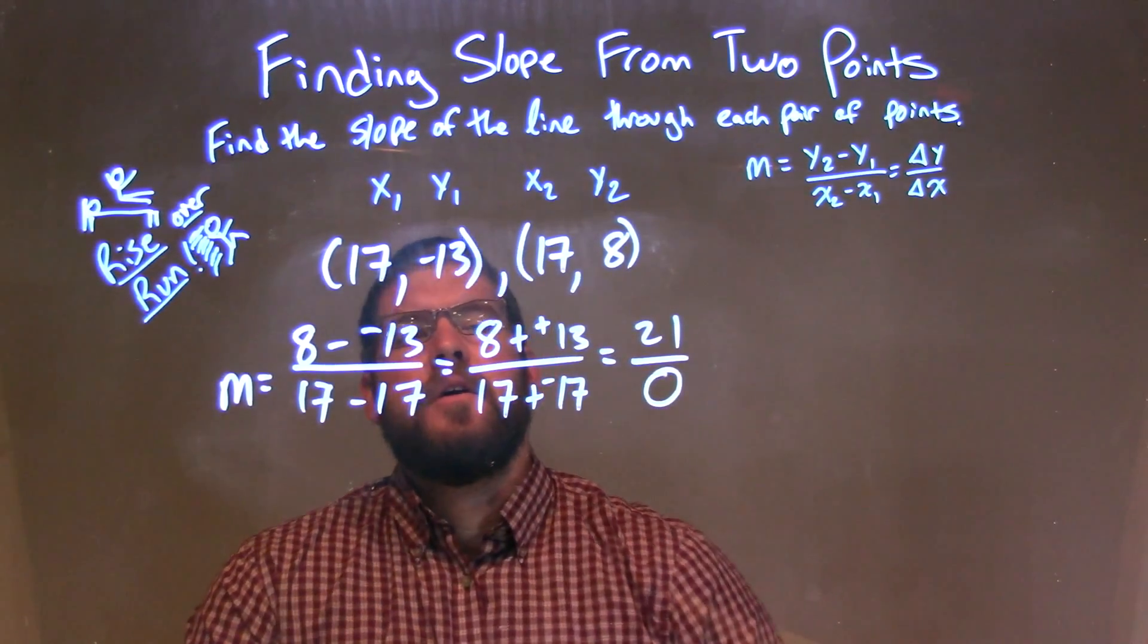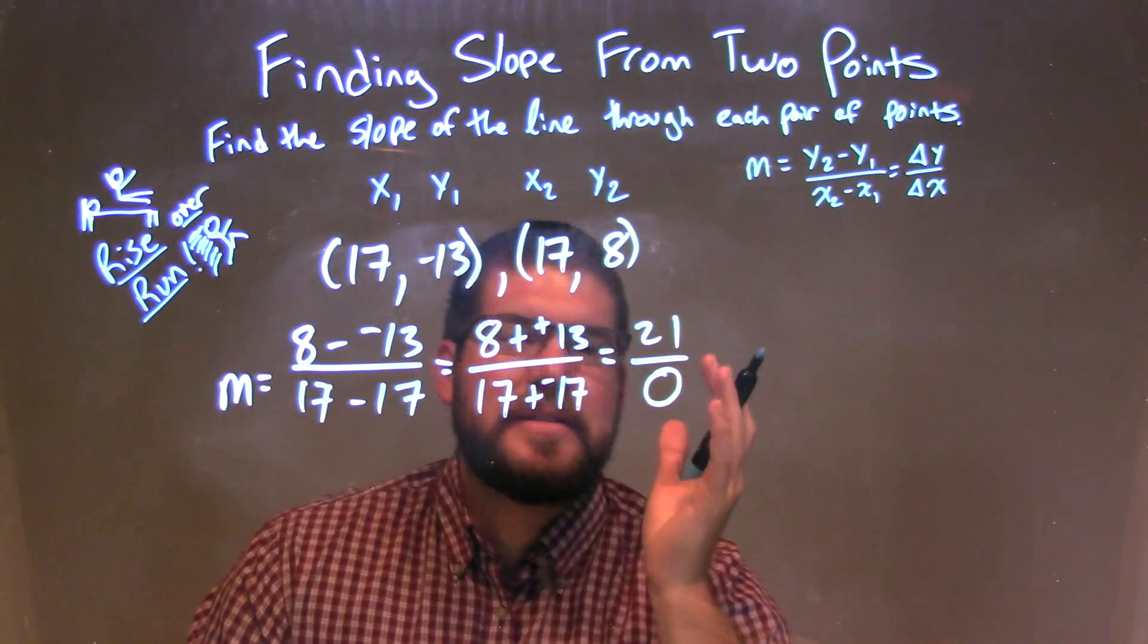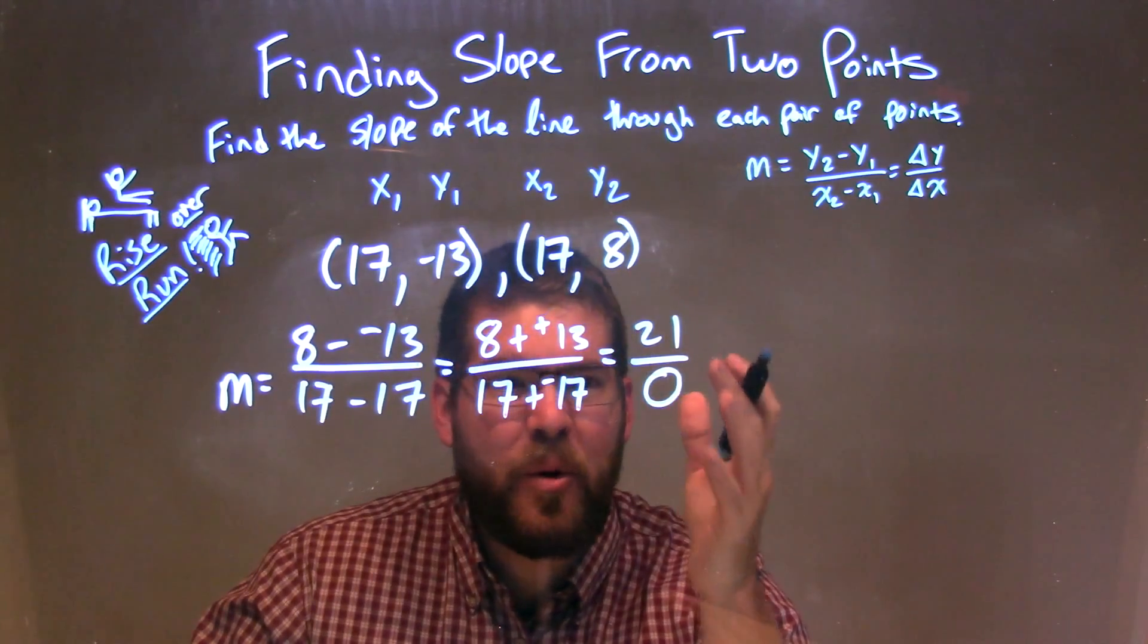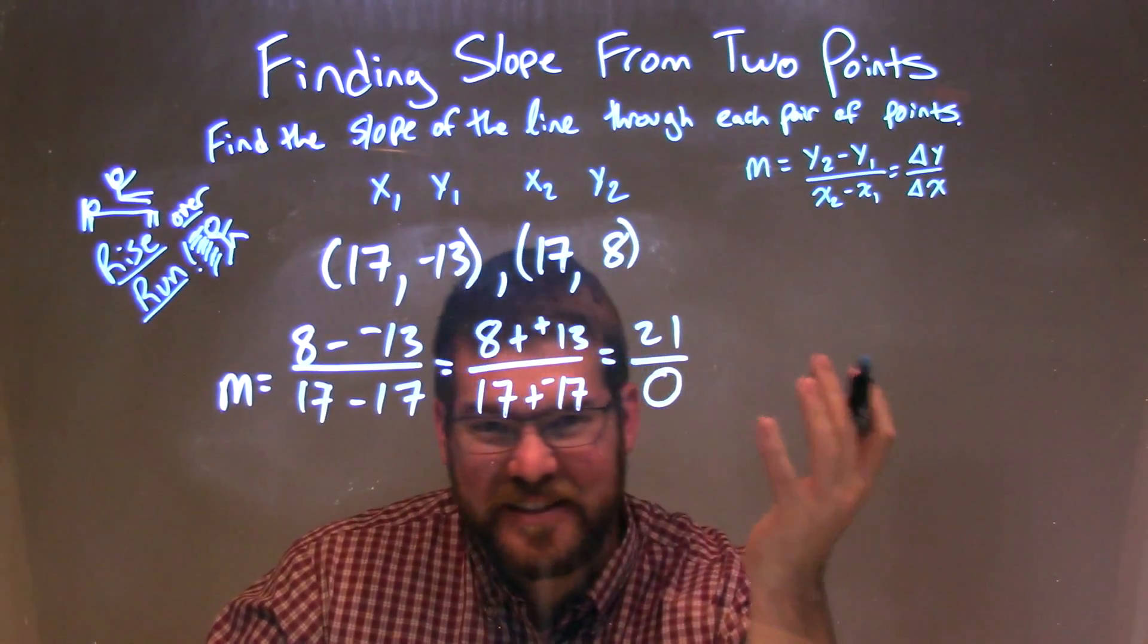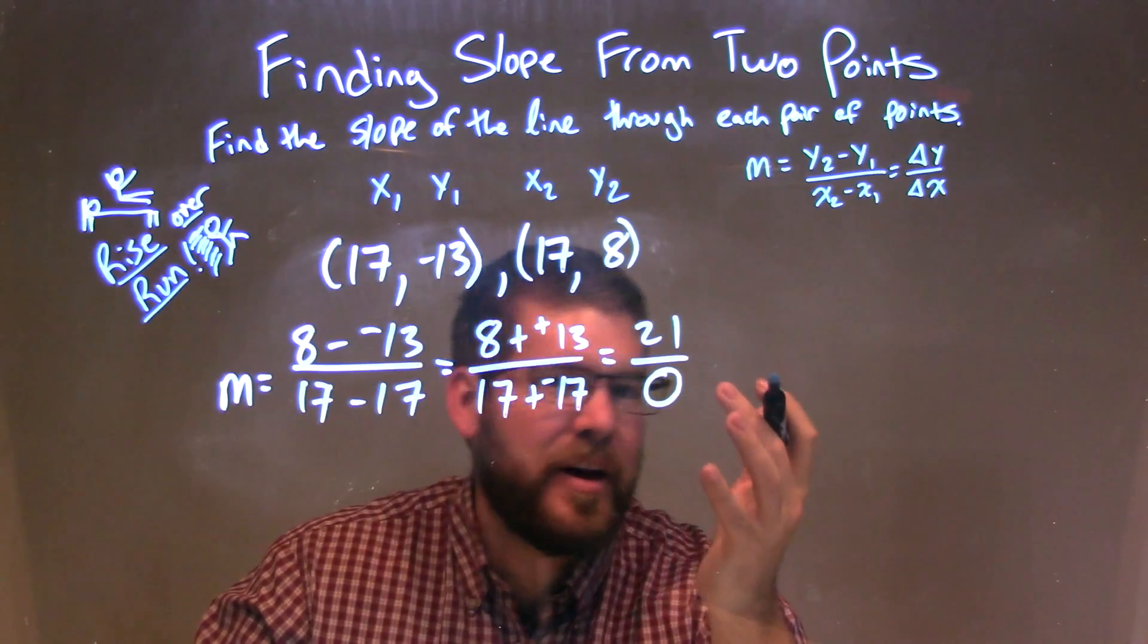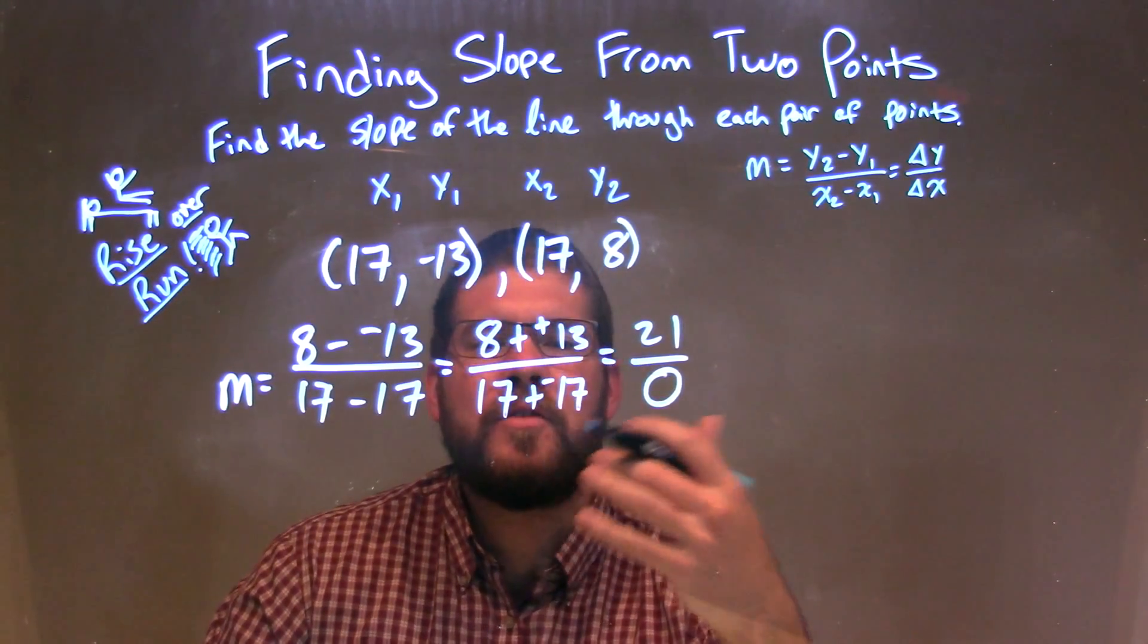Uh-oh, we got a 0. 0 shouldn't always be scary, but right now we're dividing by a 0. What does that mean? Well, we can't divide by a 0, right?